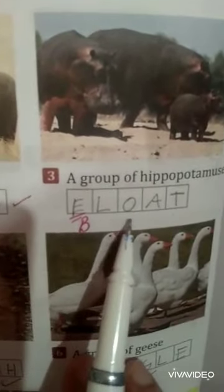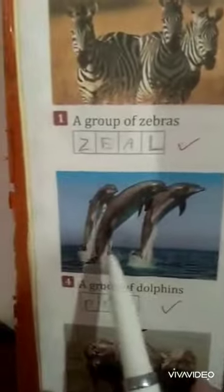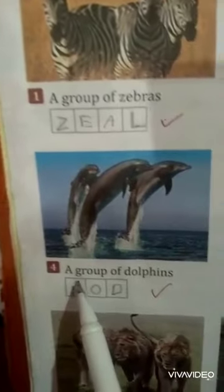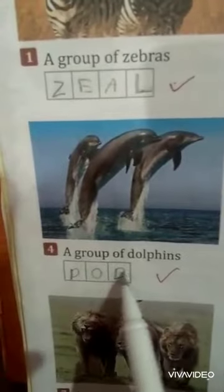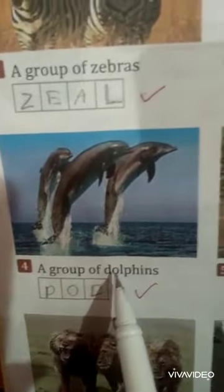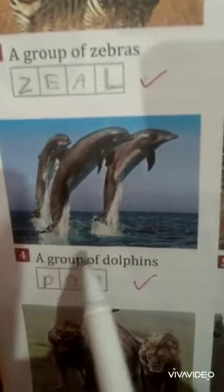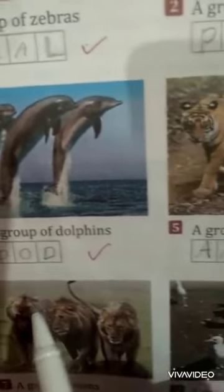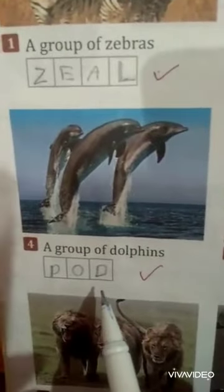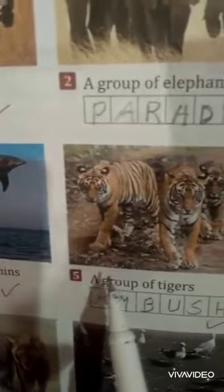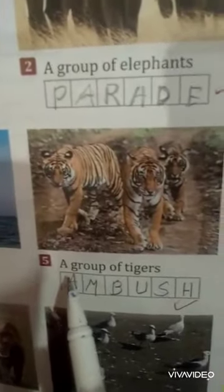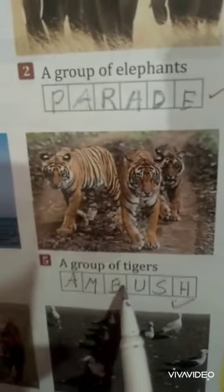A group of dolphins is called a pod. Number five, a group of tigers.